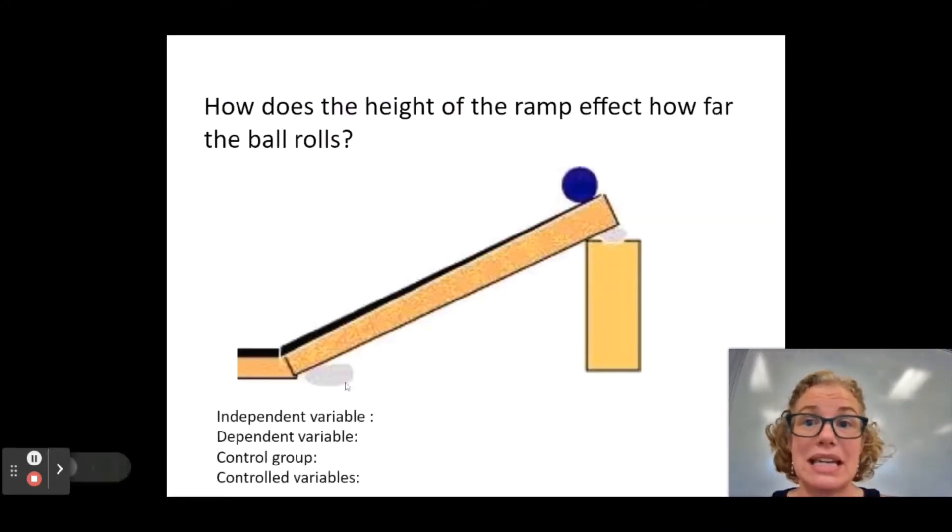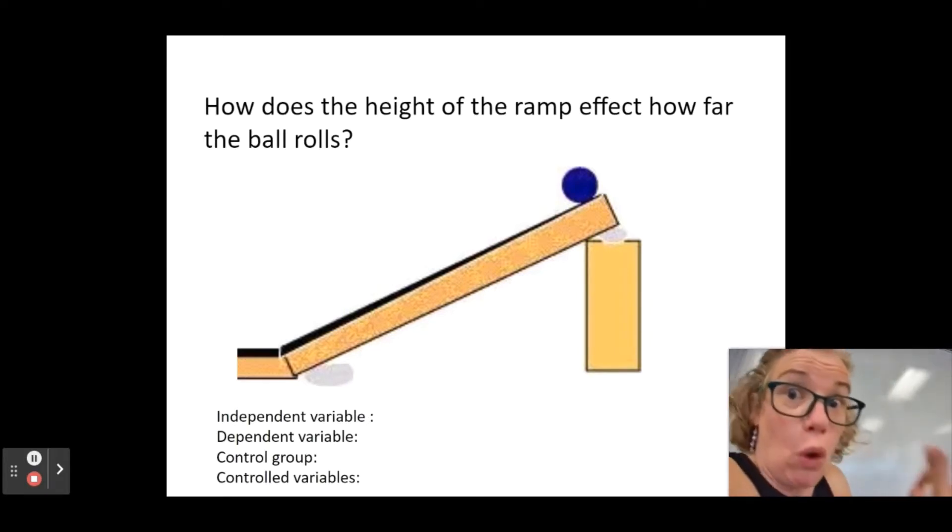Here's a ramp. What would the independent variable be? Well, what is it am I changing? Am I, the scientist, going to run after the ball and chase it and make it roll? No, that would be ridiculous.